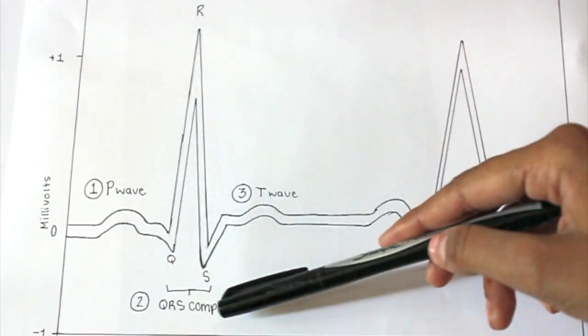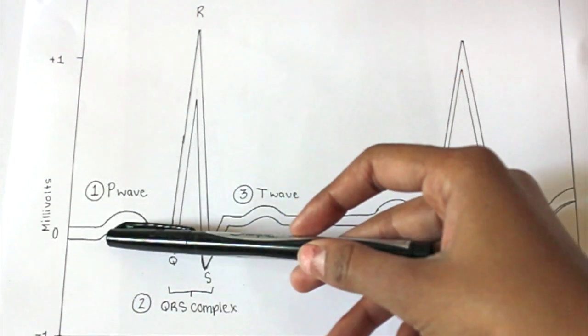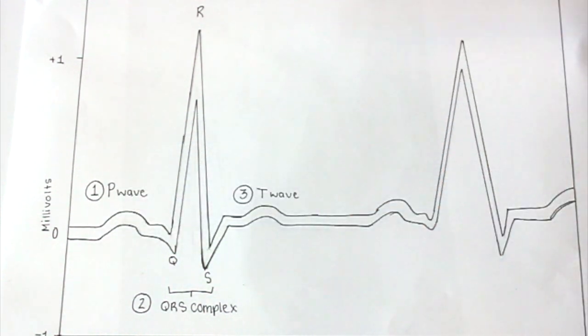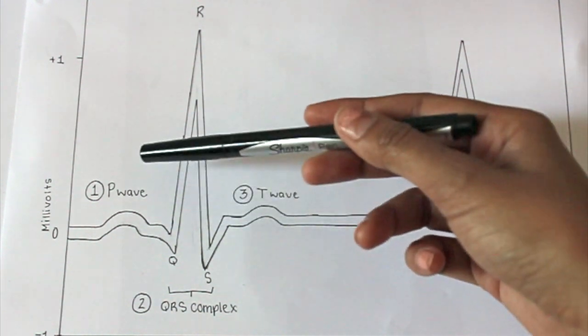the QRS complex, and the T wave. The P wave is when the SA node sends an impulse and depolarizes the atria.